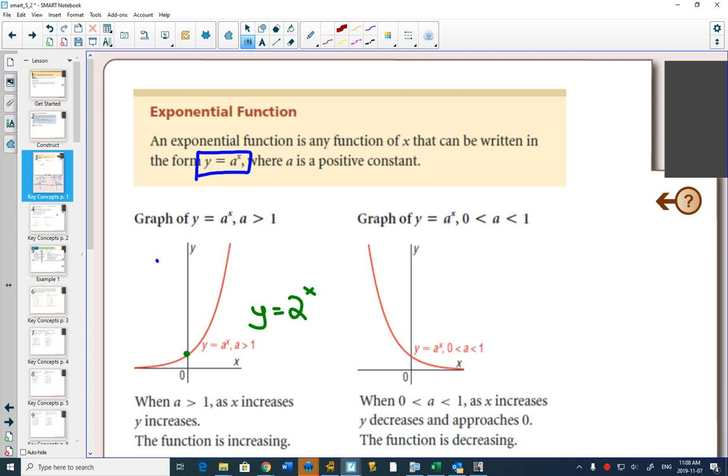It's going to always go through the point 0 comma 1. And it will go through the point 1 comma, and if it was 2, it'd be 2. If you want to label this one exactly as it is, this is a to the x, then it's 1 comma a.